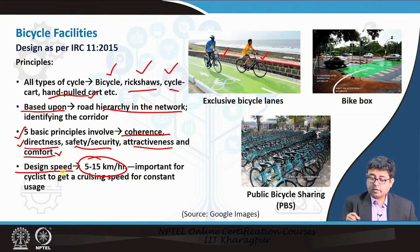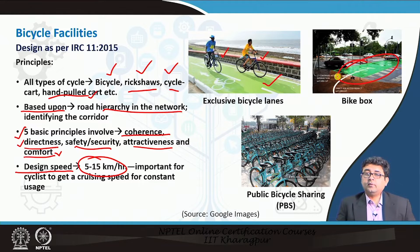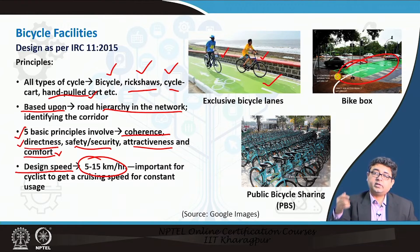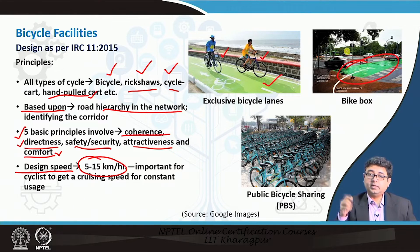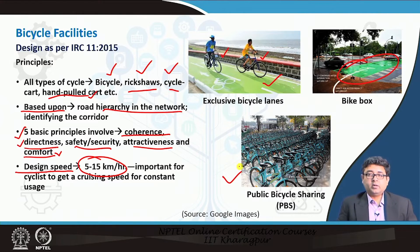You may have already seen bicycle lanes now available in a few cities in India. Bicycle boxes in particular are coming up, which allow bicycles to come up to the front of the intersection, so that when the signal turns green the bicyclists are the first to leave the intersection safely. You may also have encountered public bicycle sharing systems in your cities, which allow you to rent a bicycle on an hourly basis at very cheap rates.